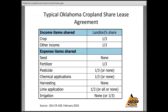For example, if a tenant provides all the costs for fertilizer but receives only two-thirds of the crop, they're incurring all of the costs but only receiving partial benefit for that expense. The tenant also pays nearly all of the seed costs and harvesting costs. Because lime application has multi-year benefits, the landlord may share in or pay all of those costs, especially if the lease is annual in nature.